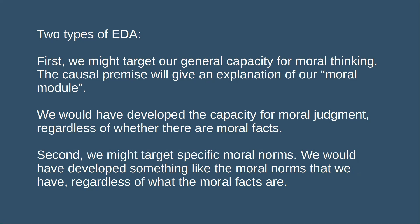We can distinguish two ways to run the evolutionary debunking argument. One option is to target the general capacity for moral thinking, where the causal premise gives an explanation of why we frame anything in moral terms — we would have developed a tendency to think in moral terms regardless of whether there are any moral facts. Second, we might target our specific moral beliefs — the causal premise would give an explanation for the content of our moral norms, arguing we would have developed something like the moral norms that we have regardless of what the moral facts are.